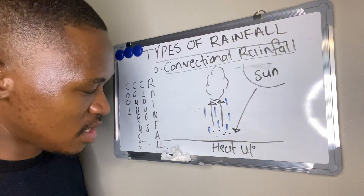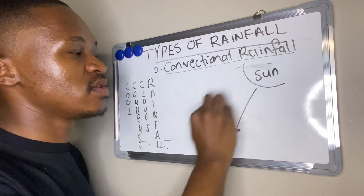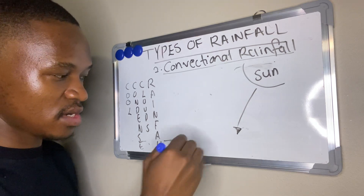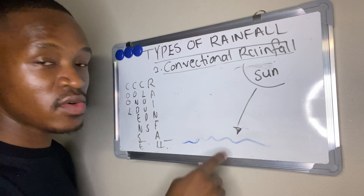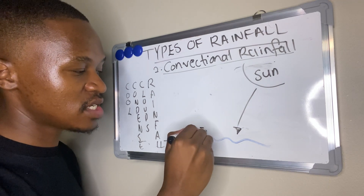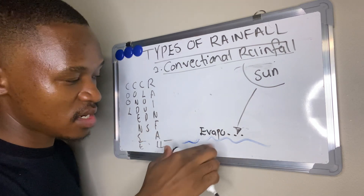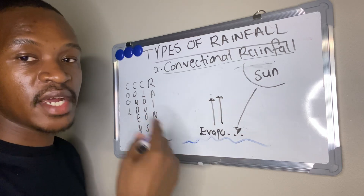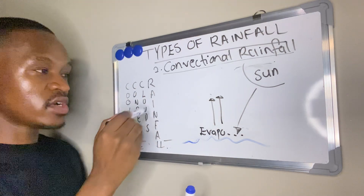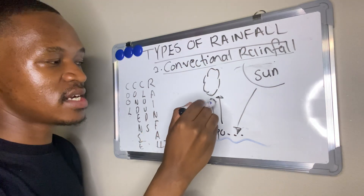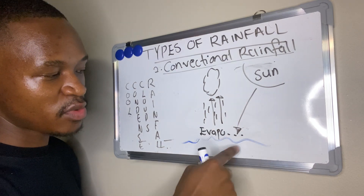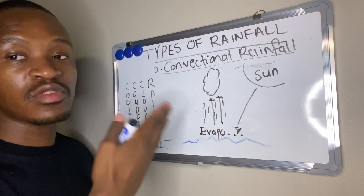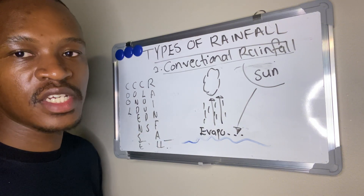If the sun strikes an ocean, the process is still the same. The sun strikes the ocean, the water turns into water vapor through evaporation, giving us warm moist air. The moist air rises, and we apply the Triple C-R: it cools and condenses to form clouds, and clouds bring about the rainfall. So when there's a body of water, the water evaporates to give moist air, which rises to form clouds, and clouds bring about rainfall. That is the second type — convectional rainfall.